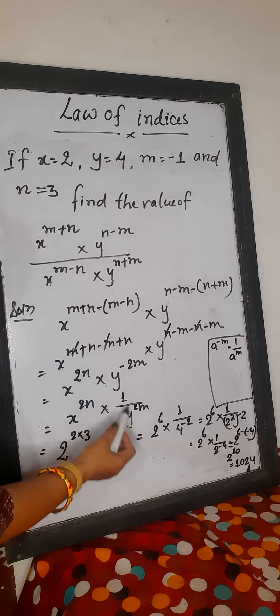Now putting in the values: 2m, n ka value 3, x ka value 4, and m ka value minus 1. So we get: 2m into n is 2 into 3 equals 6, giving 2 to the power 6; and 2 into minus 1 equals minus 2.